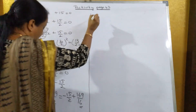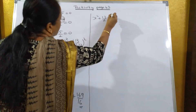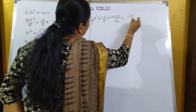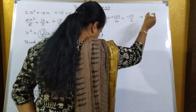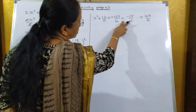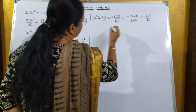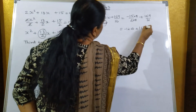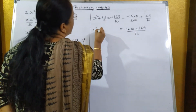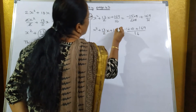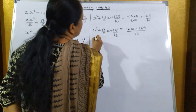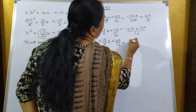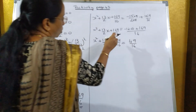Your equation becomes x² plus 13 upon 2 x plus 169 upon 16 is equal to minus 15 upon 2 plus 169 upon 16. To equalize the denominator, multiply minus 15 upon 2 by 8 to get minus 120 upon 16. So you get minus 120 plus 169 upon 16. When you subtract this you get 49 upon 16.